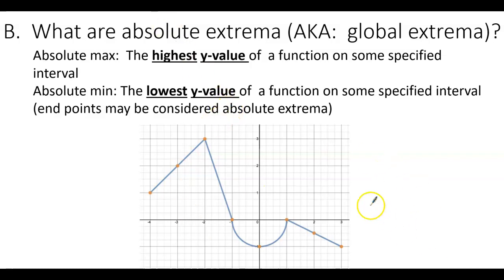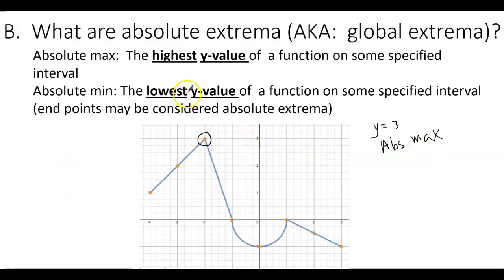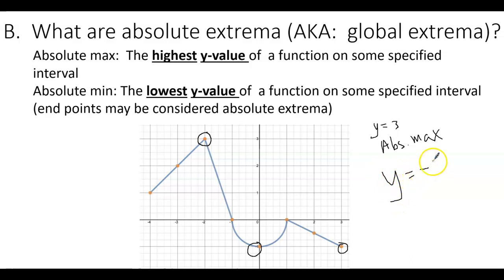The highest point is right here, so we would say y equals 3 is an absolute max. Notice I said the y value, not the x value — extrema are the y values. The highest y value is y equals 3. What's the lowest y value on this graph? The lowest y value is here or here — they're the same. There's a y value that's less than all the other y values on this graph, and that would be y equals negative 1, the absolute minimum.